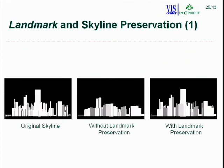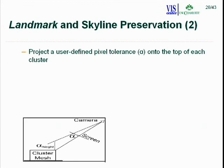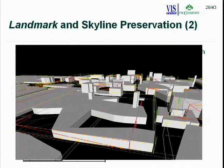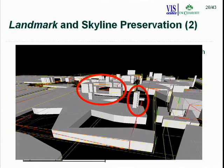For landmark preservation, the original skyline, the model without preservation, and the model with preservation are compared. Adding a few visually important buildings gives back the sense that the result is very similar to the original. This works by projecting a user-defined tolerance alpha onto each cluster mesh; any building taller than alpha height is drawn separately on top of the cluster mesh, preserving the skyline.